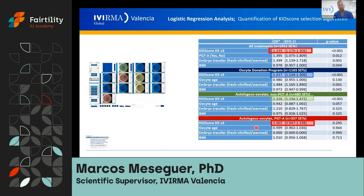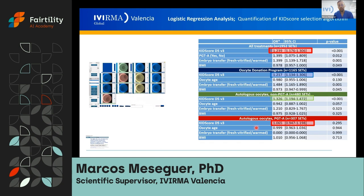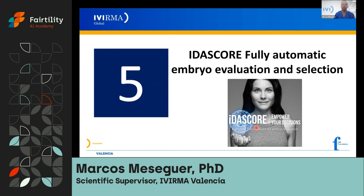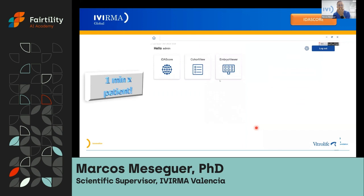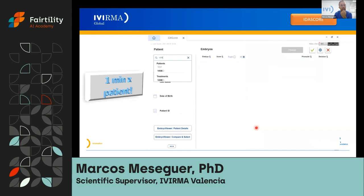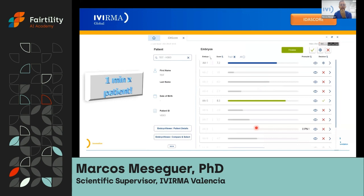This relationship was observed in oocyte donation and standard cycles, but we did not observe it in PGTA cycles. The reason behind this could be that in PGTA cycles, we do assisted hatching on day three, and that may confuse the annotations after that event. We also evaluated the IDA score — a fully automatic evaluation system for embryo selection. With IDA score, you only need one minute per patient, because you don't need to do any kind of annotation. You simply look up your patient in the database, and in one minute you have the ranking of embryos ordered from highest to lowest implantation potential.